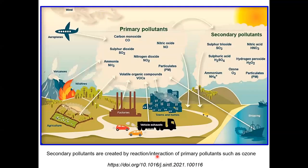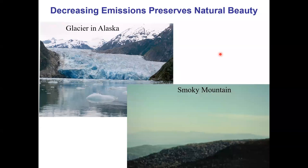This slide shows the sources of pollutants — primary pollutants that we get from Mother Nature as well as from industrial activities and automotive exhaust. We can also get secondary pollutants, which are created by the reaction or interaction of primary pollutants. This is what we are trying to detect and protect the environment from, so that we live in a healthy environment.